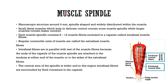Now let's talk about muscle spindle. Muscle spindles are microscopic structures, spindle-shaped, and widely distributed within muscles. Small distal muscles helping in delicate control contain more muscle spindles. Each muscle spindle contains 8 to 12 intrafusial muscle fibers enclosed in a connective tissue capsule, which also contains fluid in the central area. Extrafusial muscle fibers are the regular contractile units outside the capsule.